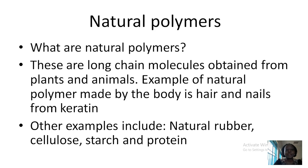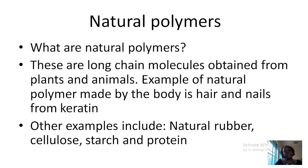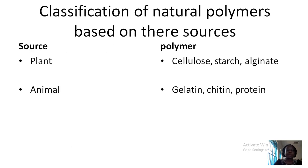Now we want to look at the natural polymers. What are natural polymers? These are long chain molecules obtained from plants and animals, and examples of the natural polymers include mainly those that are part of our bodies: the hair and the nails, and their monomer is keratin. We also have the natural rubber, we have the cellulose, we have the starch and then we have the proteins.